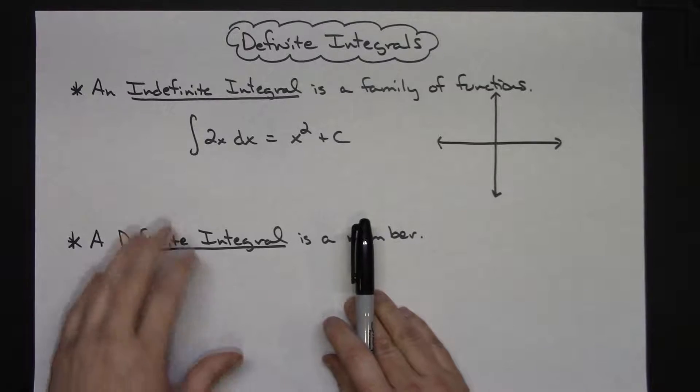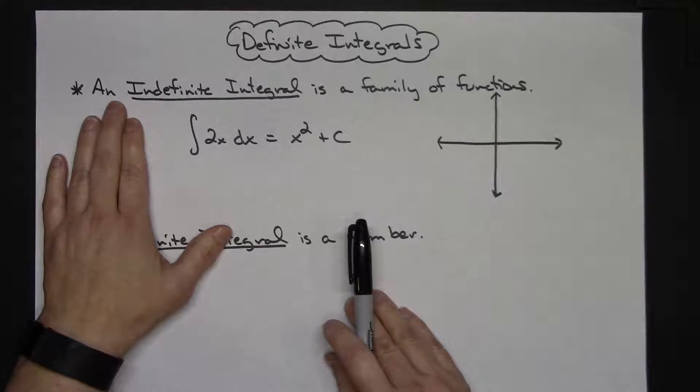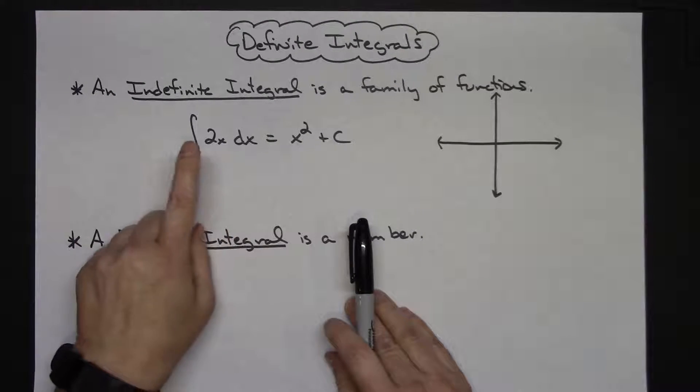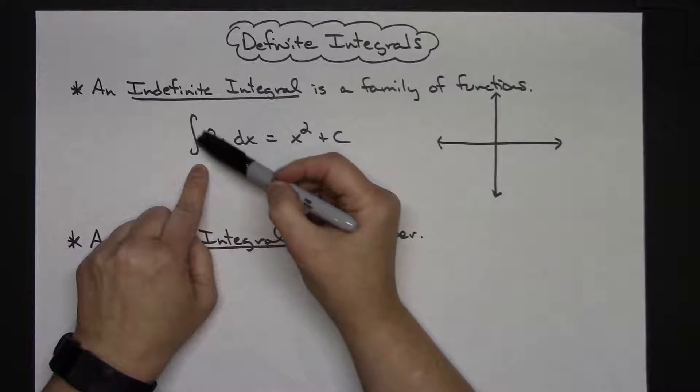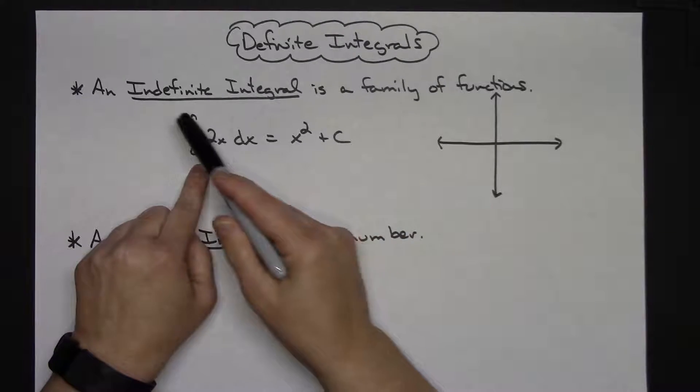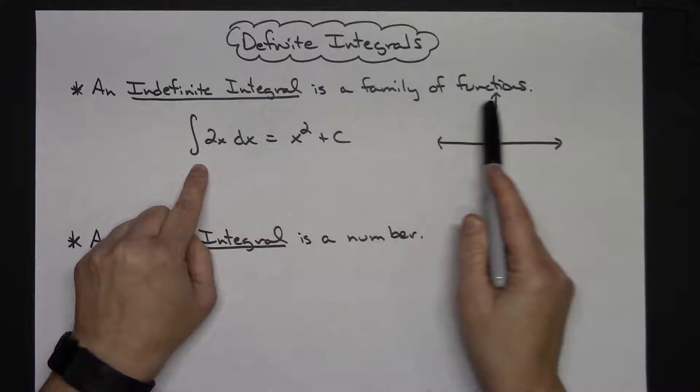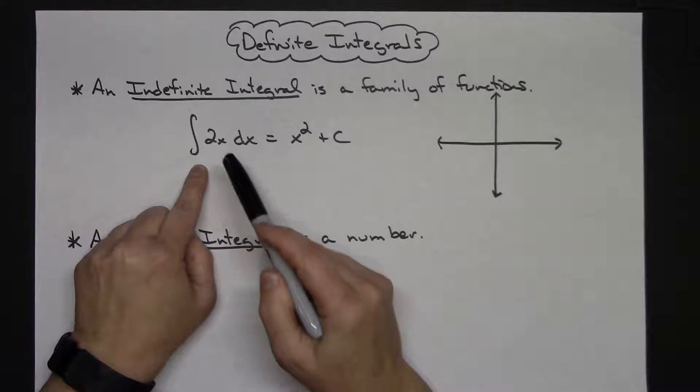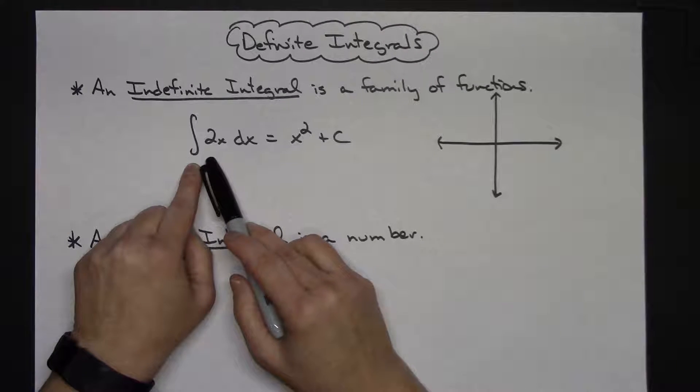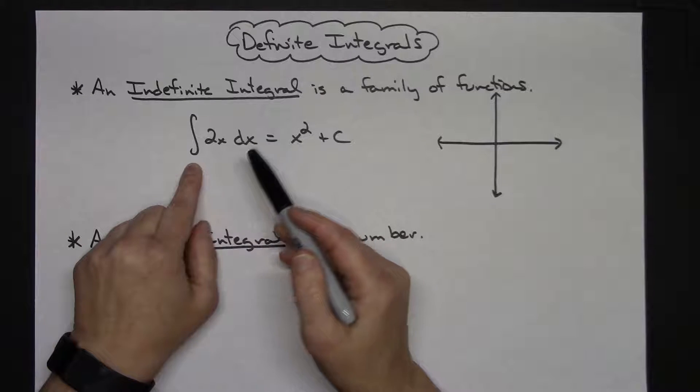So for starters, let's go back and look at an indefinite integral. An indefinite integral does not have any numbers on either side of this. You can refer to it as a family of functions. This integral right here, at this point hopefully you've been introduced to power rule.